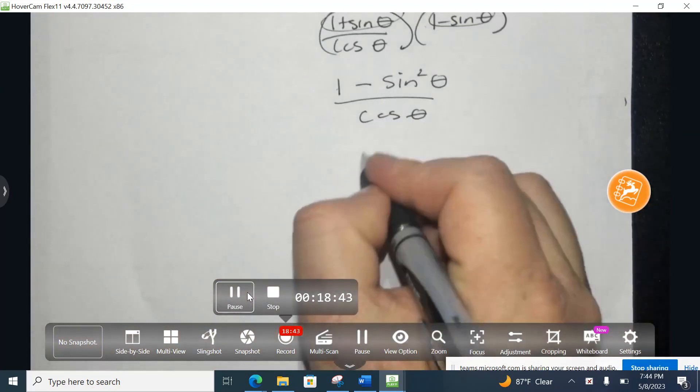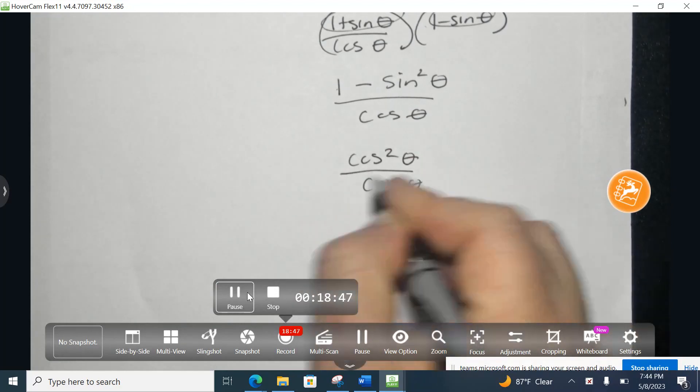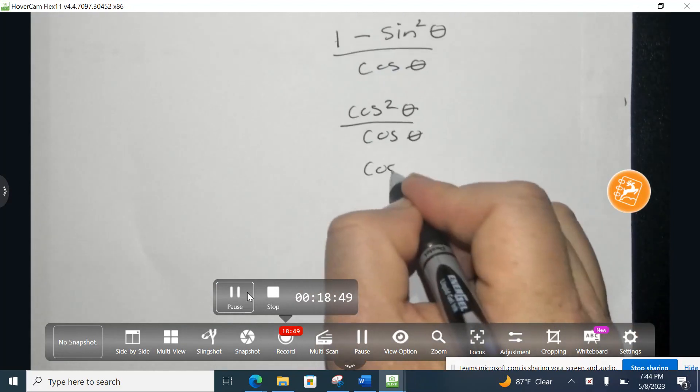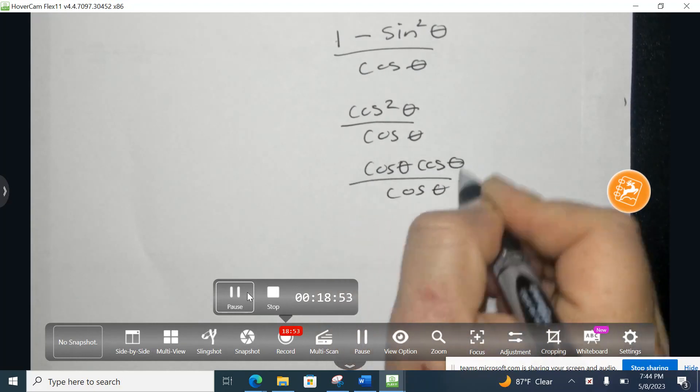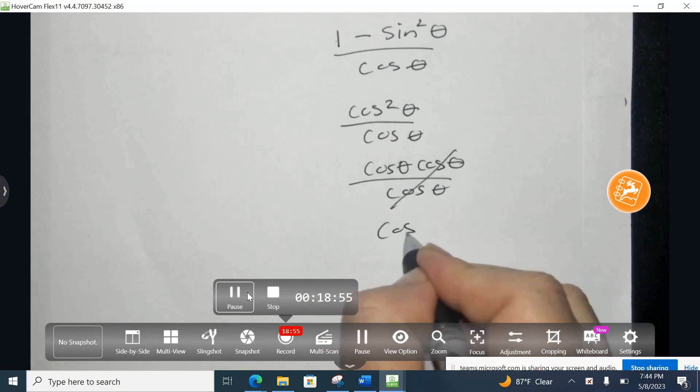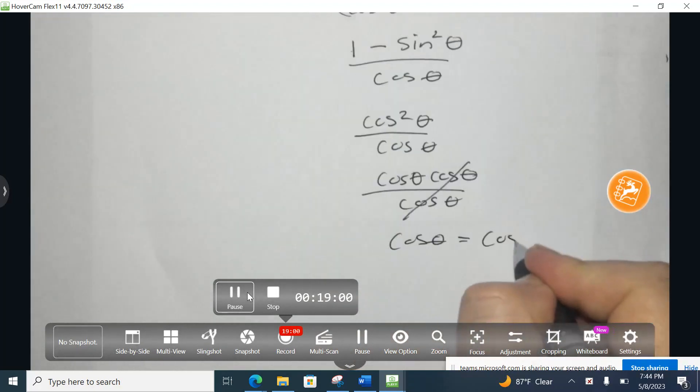So my numerator is actually equal to the cosine squared over cosine. Now, that's two cosines on the top. So think of it as cosine times cosine on top and one cosine on the bottom. So I'm left with just one cosine on top, and that's exactly what I want to achieve from the right-hand side.